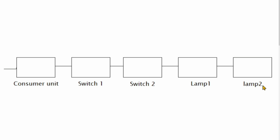You can see that this type of diagram is very simple, and it doesn't give much detail. Looking at this drawing, the information here is very limited. A beginner electrician cannot use this diagram to do anything meaningful. The only thing you can tell is that there is a wiring comprising a consumer unit, two switches, and two lamps.